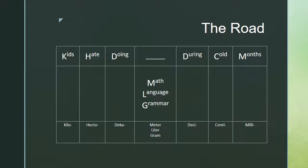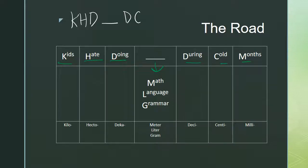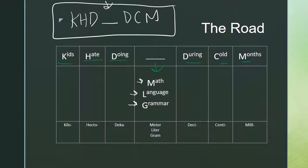Let's talk about the road. Every time you have to convert metric measurements, we want you to write the road at the top of your paper. The road is the saying: 'Kids hate doing something, either math, language, or grammar, during cold months.' What we'd expect to see at the top of your paper is 'Kids hate doing something during cold months.' They may hate doing math, language, or grammar — and those stand for meters, liters, and grams. The unit in the middle is where you put the meter, liter, or gram.